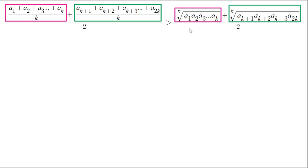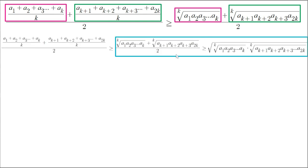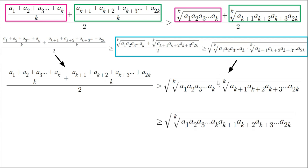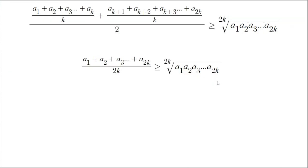Using those inequalities, we can replace the red parts with the red and the green with the green, giving us a new inequality. Then, looking at the right side, we can use the AM-GM for the case of 2 — (a + b)/2 ≥ √(ab) — replacing a and b with the red and green parts, which gives us the blue inequality. Getting rid of the middle part, we can put the kth roots together since they're both kth roots, and then we get the 2kth root. We can then join the left-hand side back together to get: the arithmetic mean of a₁ to a₂ₖ ≥ the geometric mean of a₁ to a₂ₖ. So, if it's true for k, it's true for 2k — we have it for all powers of 2.